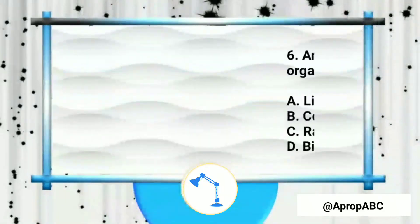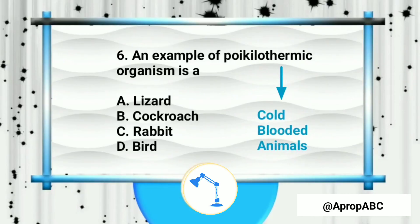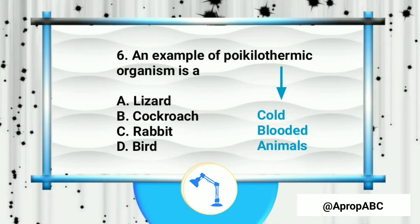An example of a poikilothermic organism — the options are lizard, cockroach, rabbit, and bird. Poikilothermic means cold-blooded. Warm-blooded animals include mammals; cold-blooded animals include reptiles and fish. The answer is lizard, which is a reptile. Cockroach is an insect, rabbit is a mammal, and bird is also warm-blooded.